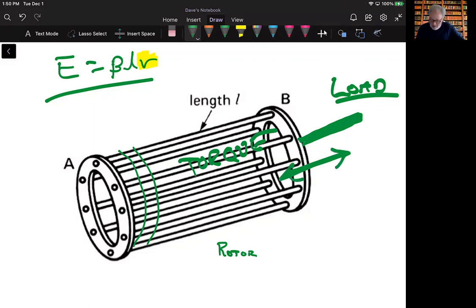Again, increase the load, slow down the rotor - voltage is going to increase because of the relative difference.